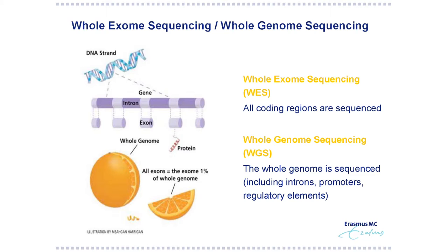Now, whole exome sequencing and whole genome sequencing. This is a schematic slide to introduce the difference. A DNA strand has exons and introns. With whole exome sequencing, you sequence only the coding regions. With whole genome sequencing, you sequence the whole genome including the non-coding regions. It's important to realize that only 1% of the genome is taken up by the exome, so with whole genome sequencing the amount of data is much larger.